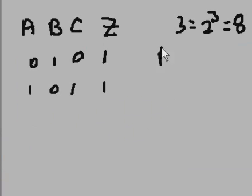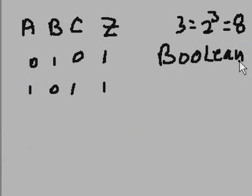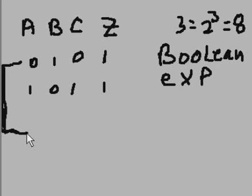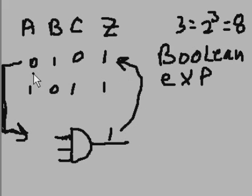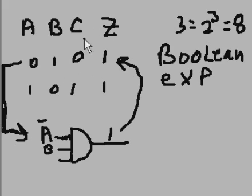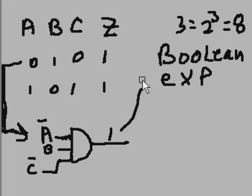Step number two: Boolean expression time. If you took the first row where Z=1 — inputs A=0, B=1, C=0 — and fed A, B, and C into an AND gate, how could you make that come out as a 1? You'd have to NOT A (since it's 0), leave B alone (it's already 1), and NOT C (since it's 0). So the first term is A-not, B, C-not.